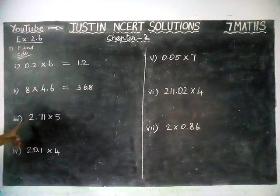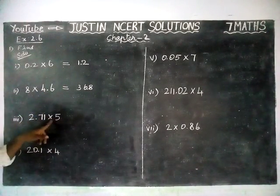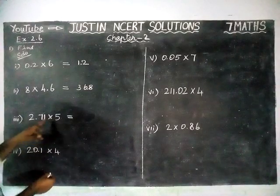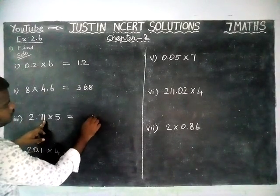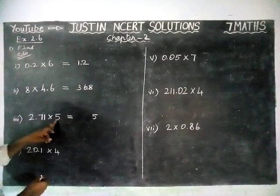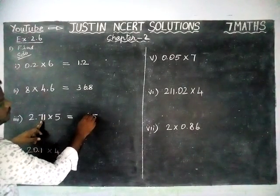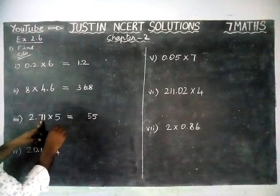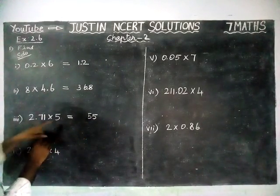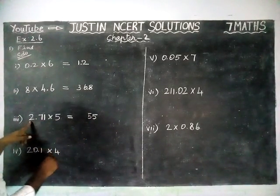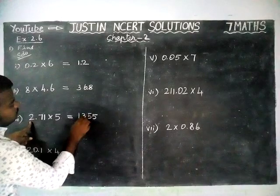And then third question, 2.71 into 5. We have to multiply the numbers. 1 times 5 is 5. 7 times 5 is 35, remaining 3. 5 times 2 is 10. 10 plus 3 is equal to 13.